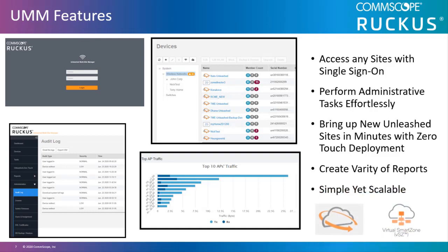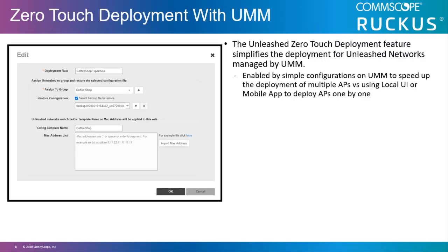UMM is simple yet scalable — you can manage up to 1,000 locations or 10,000 APs. If you're growing even more, you can move up to a controller or cloud-based deployment with your existing Unleashed APs. The Unleashed zero-touch deployment feature simplifies the deployment for Unleashed networks managed by UMM. It is enabled by simple configurations on the UMM to speed up the deployment of multiple APs versus using a local UI or mobile app to deploy APs one by one.